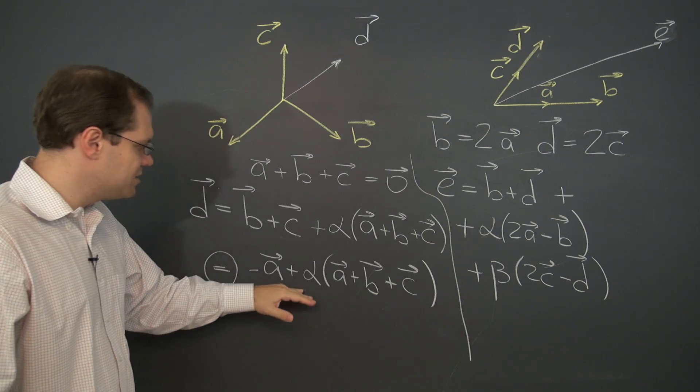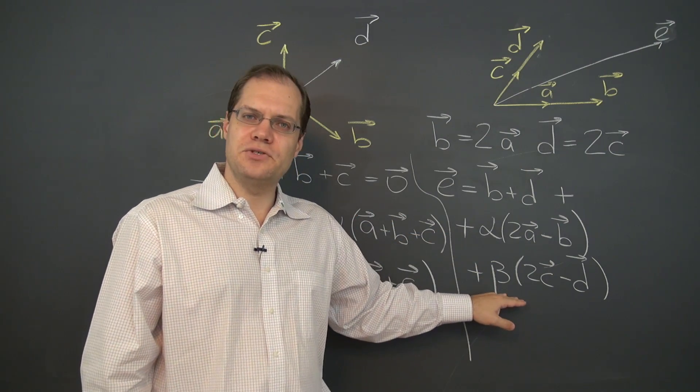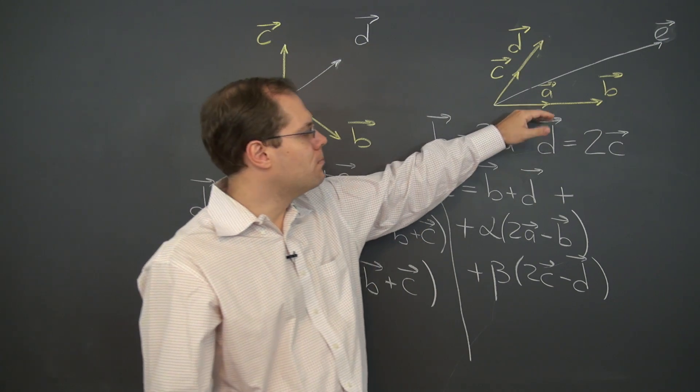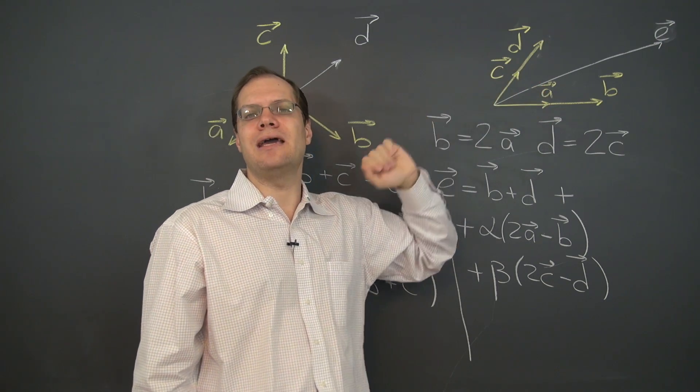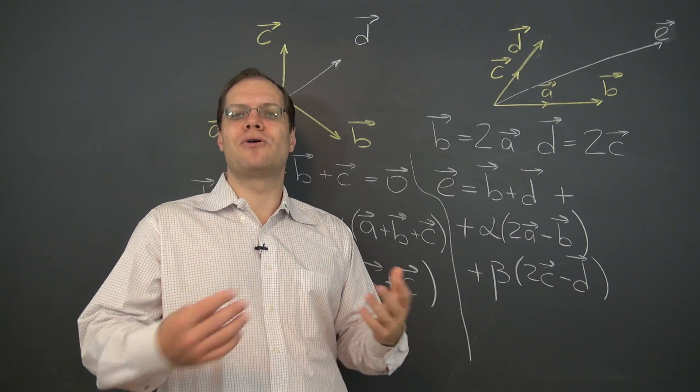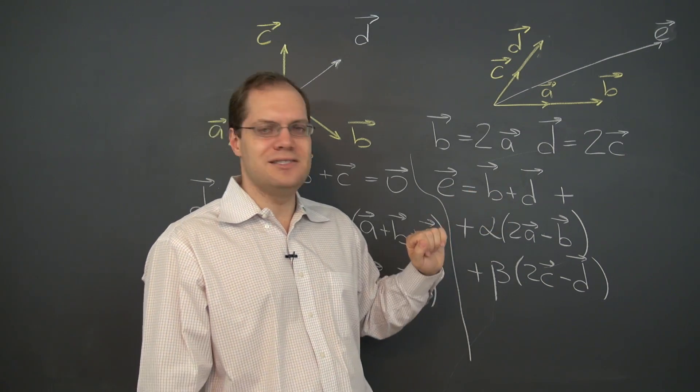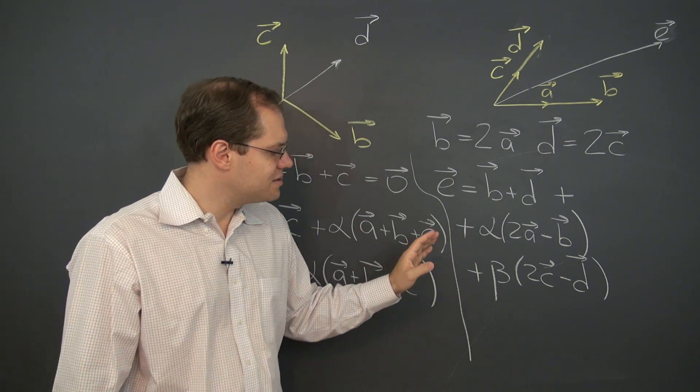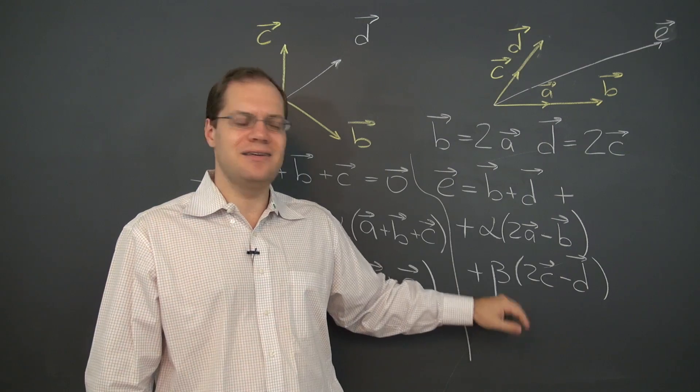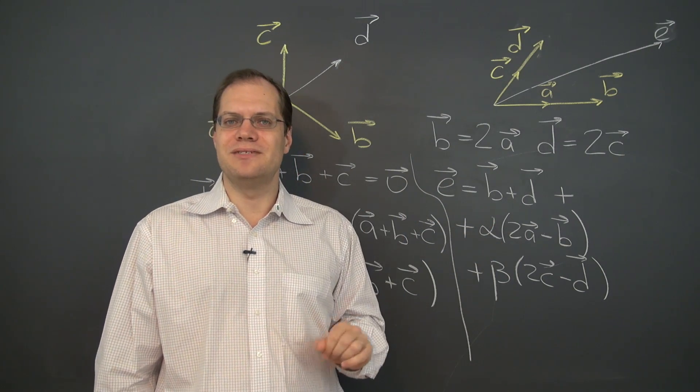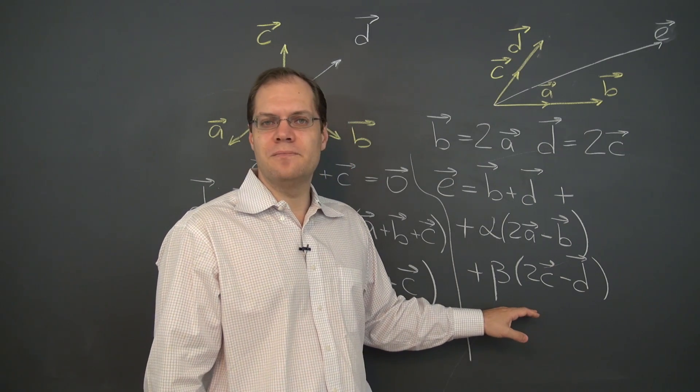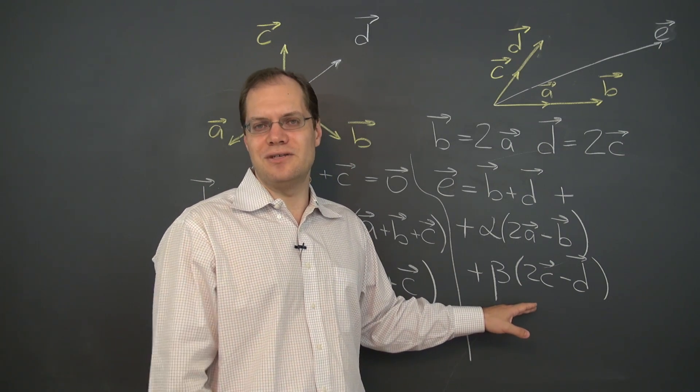Here we only had one degree of freedom. Here we have two degrees of freedom. The set is richer because there are just more relationships among a, b, c, and d. And more relationships means there are more ways to combine them in a way that would yield zero. And that means there are more ways to combine the four vectors a, b, c, and d in a way that we yield d.